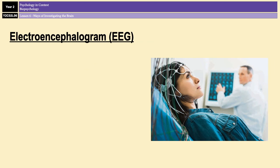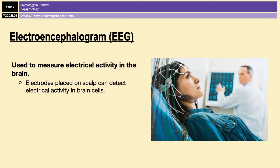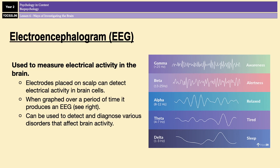A second way of investigating the brain is an EEG. EEGs measure general electrical activity in the brain. To do that, electrodes are placed on the scalp, and these electrodes detect small electrical charges which are the result of brain activity. When this electrical activity is graphed over a period of time, it produces an EEG image like the one you can see on the right of the screen.